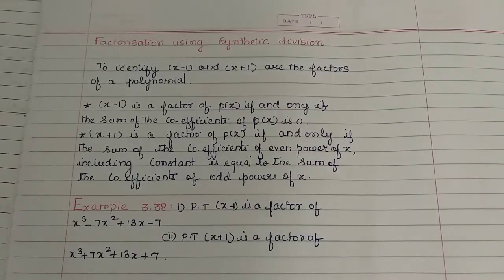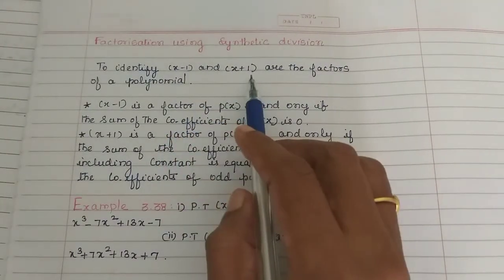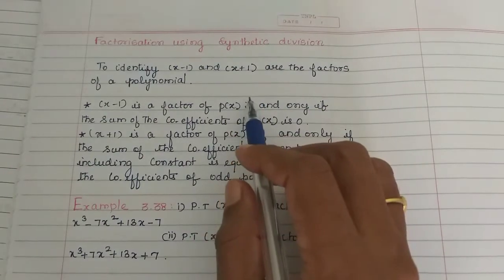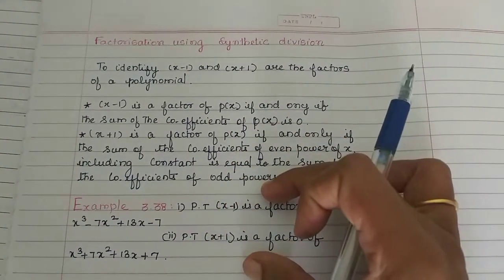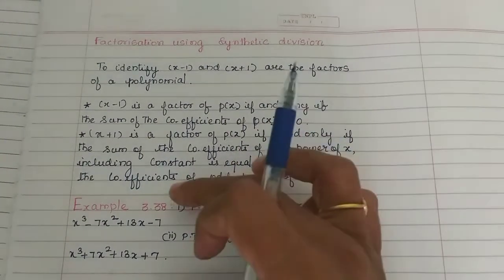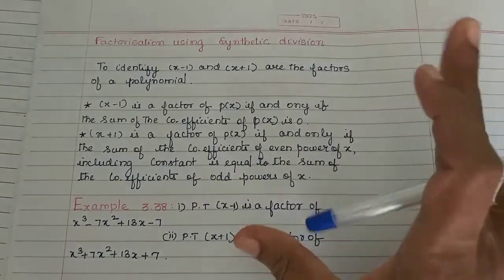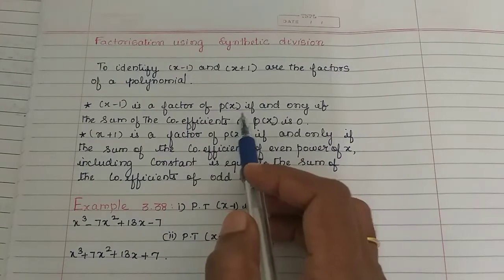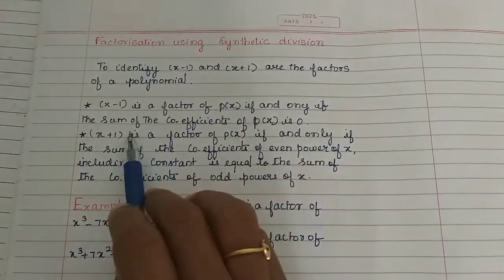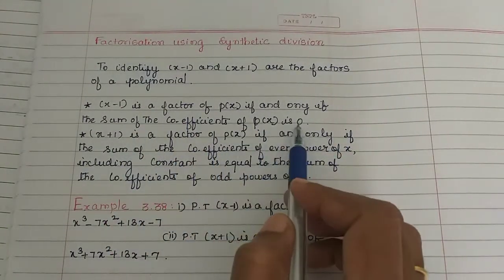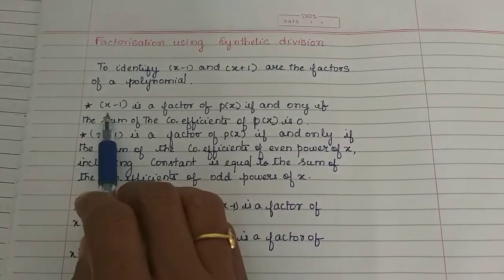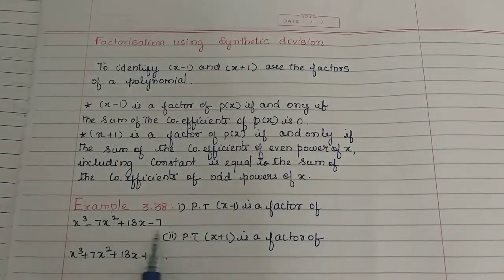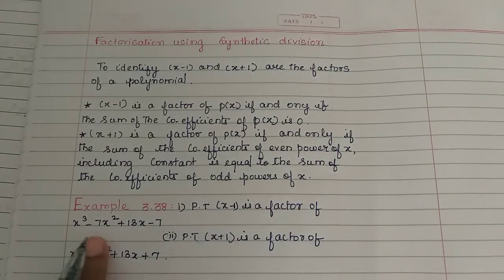Now, for synthetic division, if x minus 1 or x plus 1 is a factor, we will talk about tips. For example 3.38: x minus 1 is a factor of p of x if and only if the sum of the coefficients of p of x is 0.